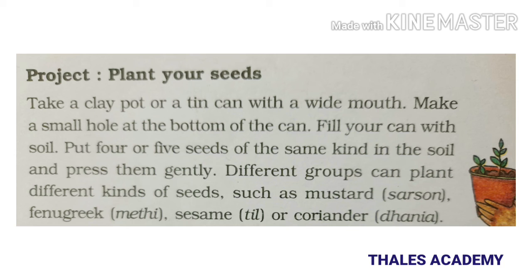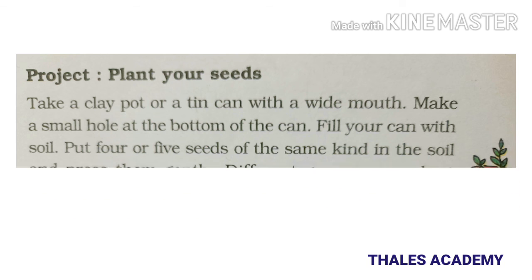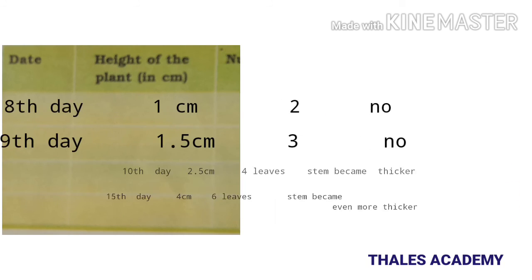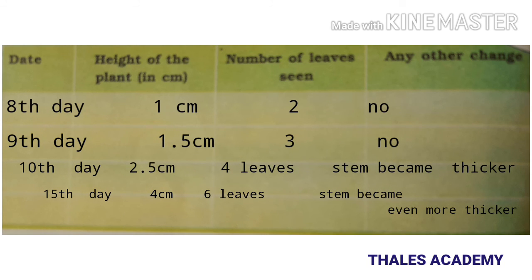Put four or five seeds of the same kind in the soil and press them gently. Different groups can plant different kinds of seeds such as mustard, fenugreek, sesame, or coriander. Here is a table to record your observations. On the eighth day or after one week, the height of the plant is one centimeter.